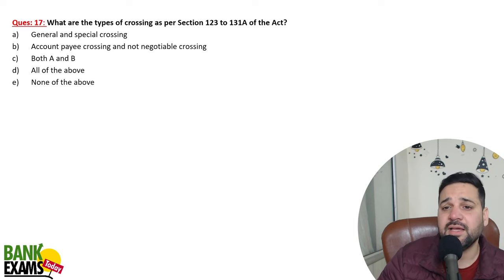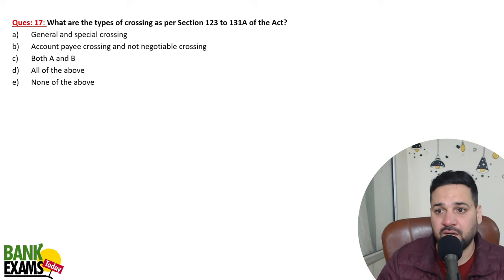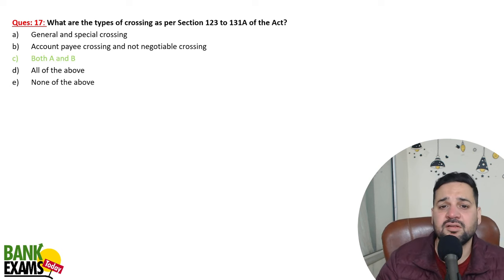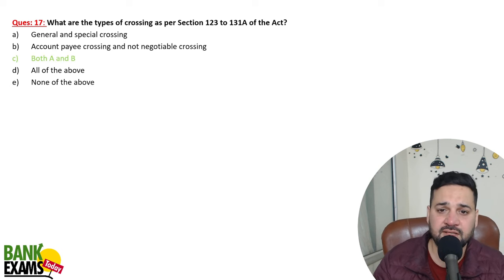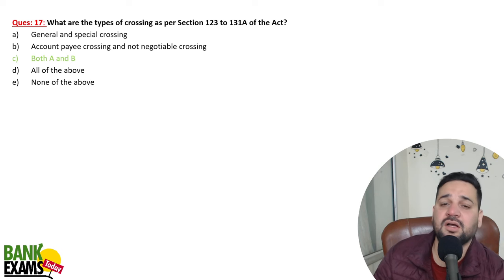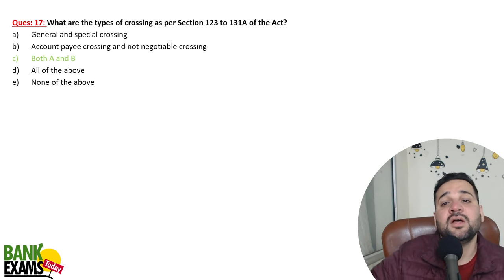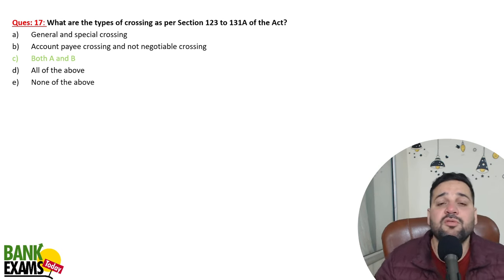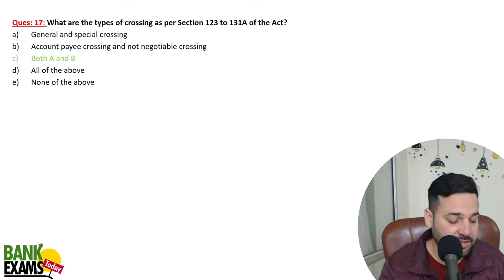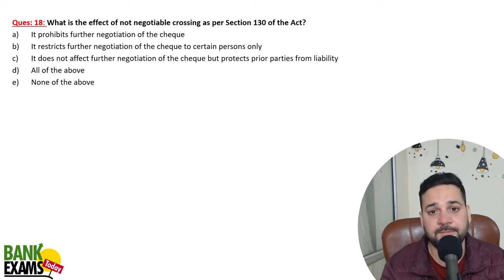What are the types of crossing as per Sections 123 to 131A? The types include general crossing, special crossing, account payee crossing — where payment goes only to a specific account — and not-negotiable crossing, where the cheque cannot be further negotiated.